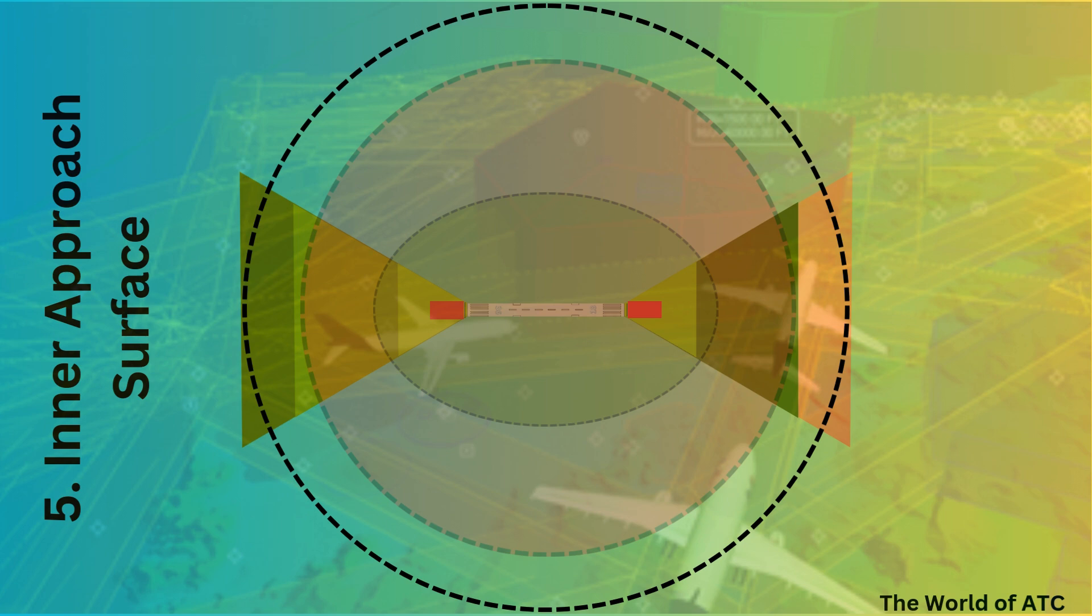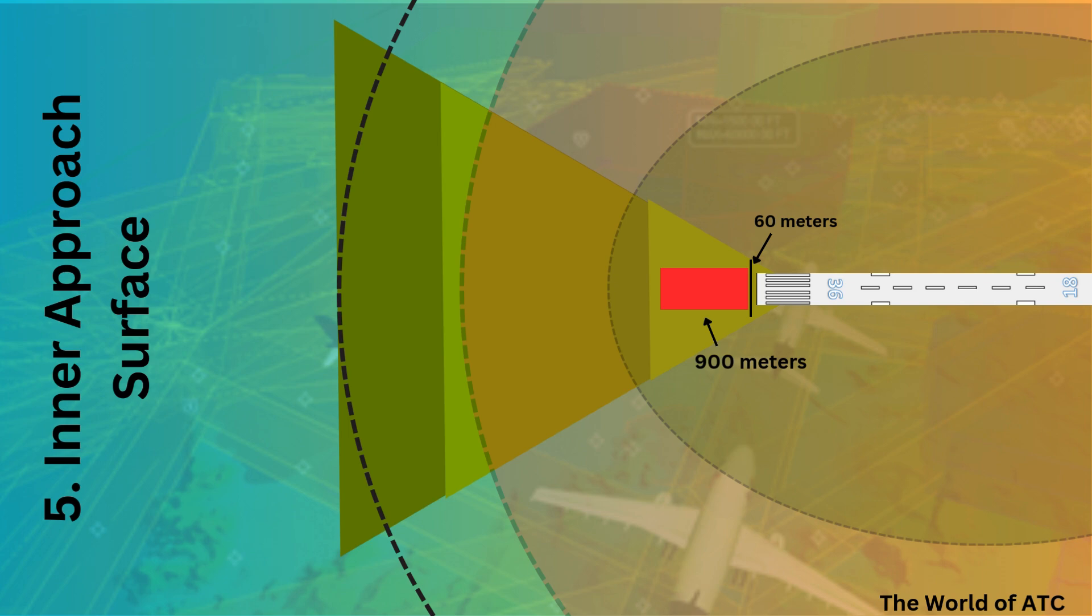Once the inner approach surface is added in OLS, the overall OLS structure of an aerodrome would look like this. The red area marked in the approach surface is inner approach surface. Zooming in for one runway.